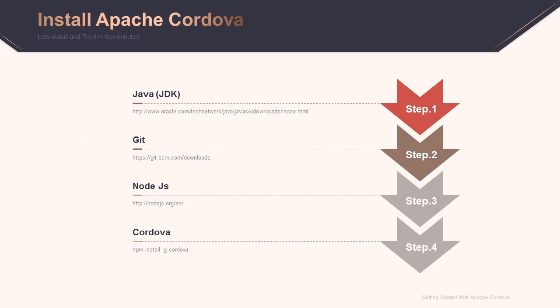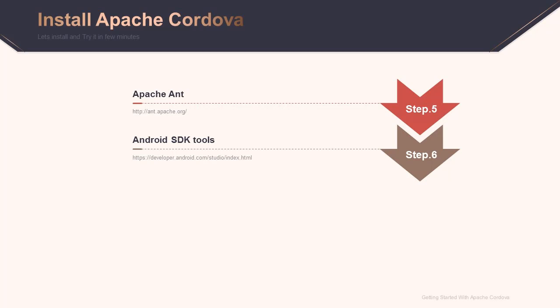Let's install Apache Cordova. These are the prerequisites which are required for Cordova: Java Development Kit, Git, Node.js, and Cordova itself. The additional thing required is Apache Ant, which is actually completely optional — nowadays it is included in the SDK tools itself. Android SDK is also required. I will share all the necessary links in the description, so make sure you check it out.